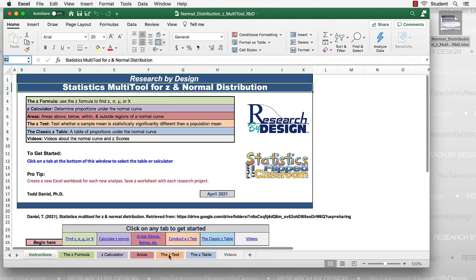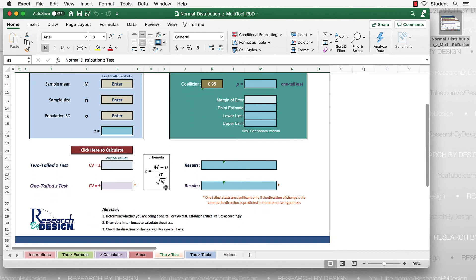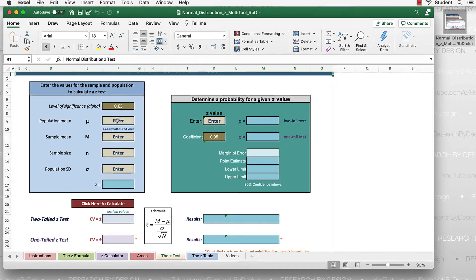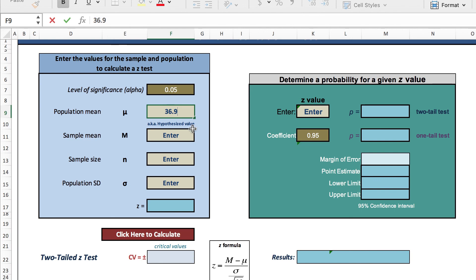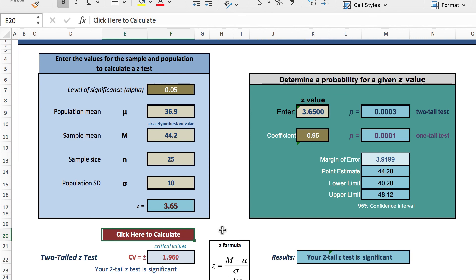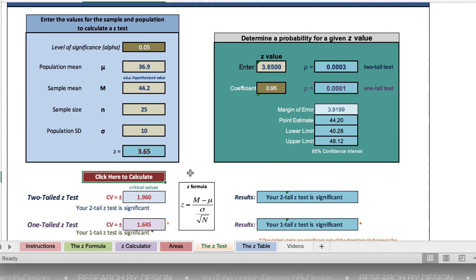Another way that you might choose to do this z-test is by using the normal distribution multi-tool that I provided for you in the class, or it's available in the link in the description of this video. Go to the tab for the z-test, and here you will find places to fill in each of the elements of the z-test, things that we already know. For instance, we'll put the population mean in as 36.9. The sample mean is 44.2. Our sample size is 25. And the population standard deviation is 10. Click on the click here to calculate, which is just an empty box. It just gets you to click somewhere else outside of the cell. And now we have a z-value of 3.65. You'll notice that our level of significance has been preset at .05. However, you can change that value to .01, .10, any other level of significance that you would choose.